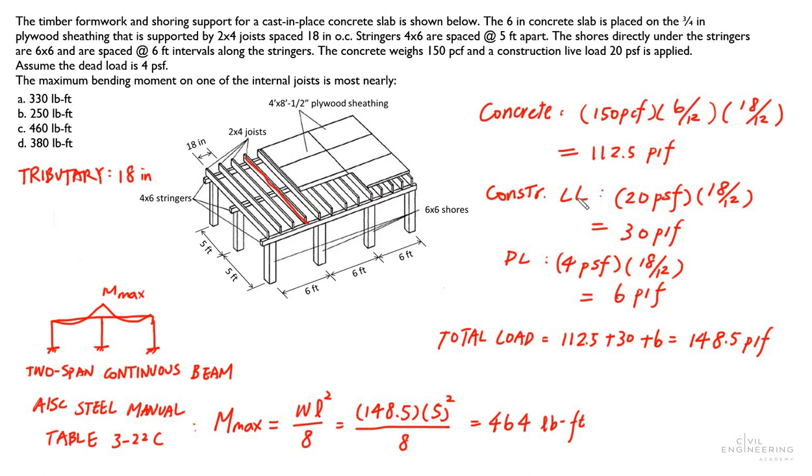And then the tributary span is going to be 18 inches, so your uniform distributed line load is going to be 112.5 plf.